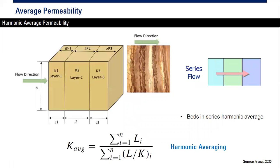This averaging method is also used in reservoir simulation, because the permeability in the model is heterogeneous — all values are different. There is no purely homogeneous permeability where it is exactly uniform; that case does not exist. So there will always be a permeability averaging method applied.